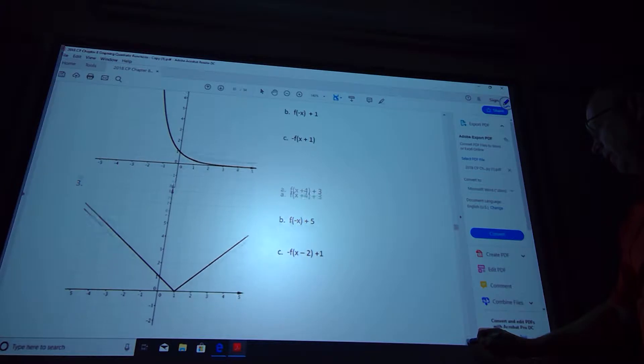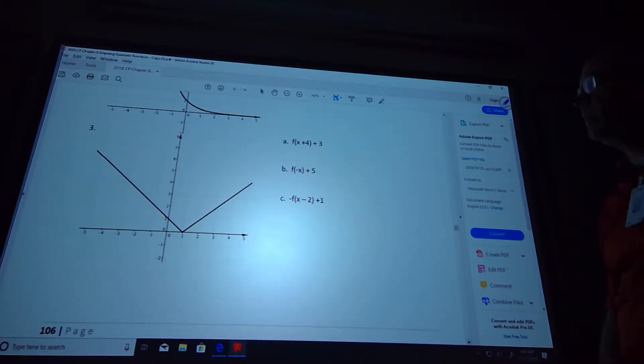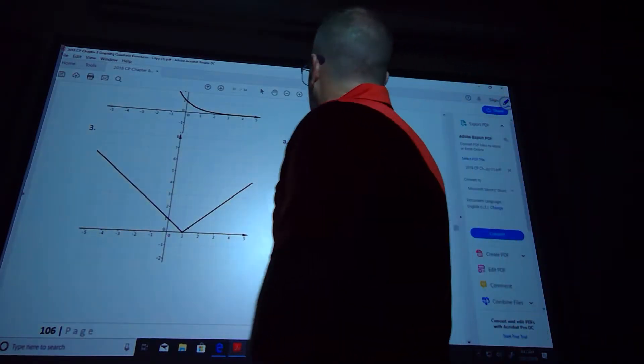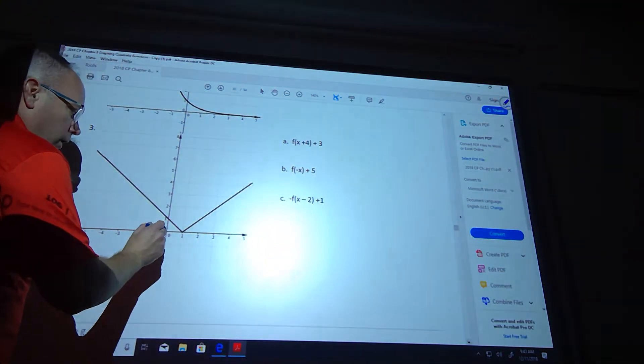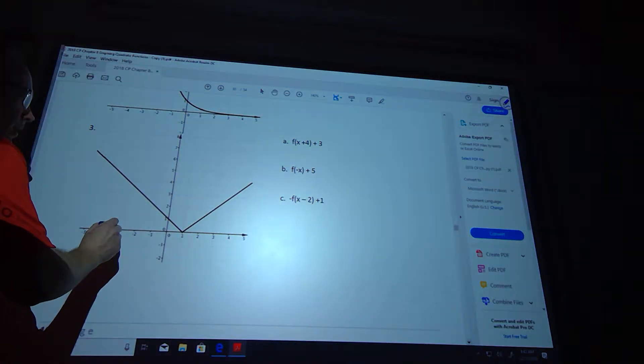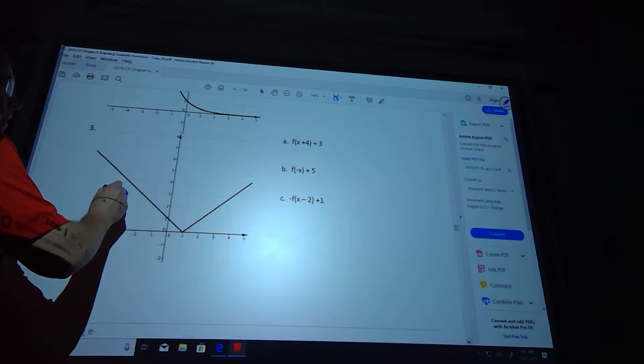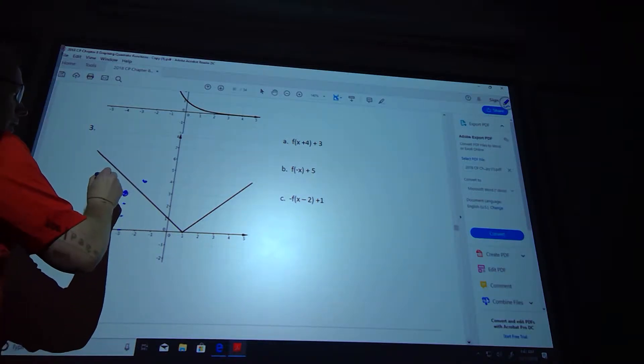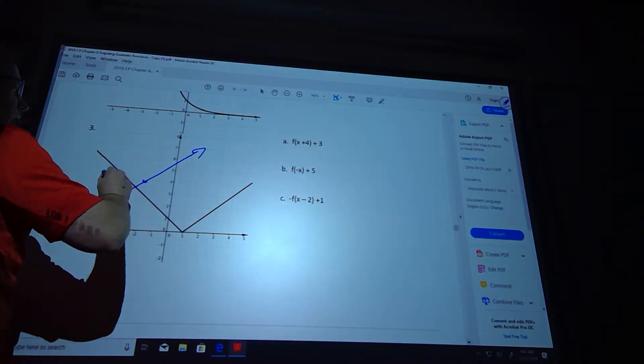Number 3 looks like an absolute value equation, but all the shifting is the same. So we're going to look at the vertex. This is going to shift left 4: 1, 2, 3, 4, and up 3. And then these are straight because it's absolute value.